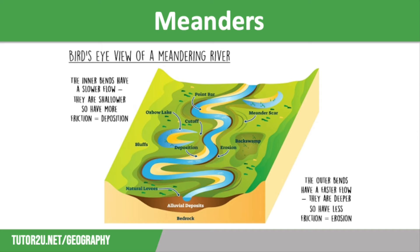Because it is shallow on the inside bend, friction slows down the flow of the water and causes it to deposit material. This makes a shallower area of sediment called a point bar.